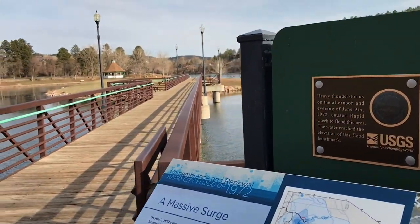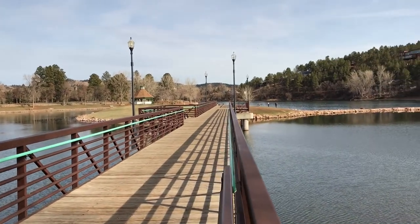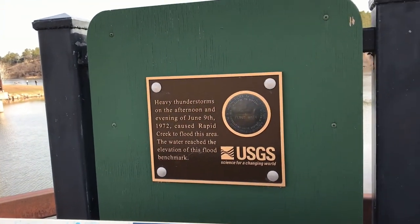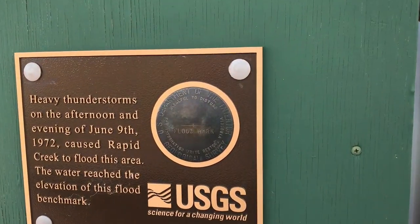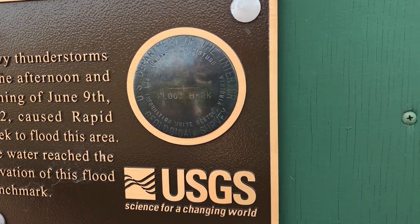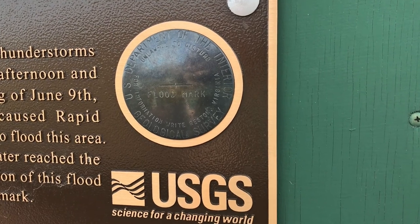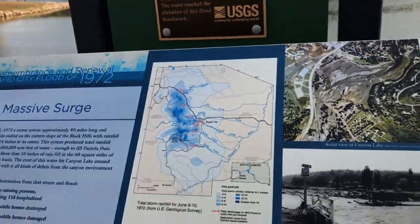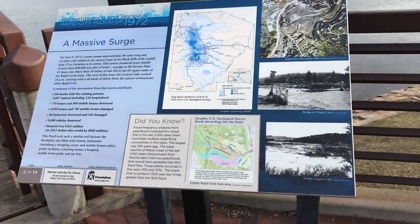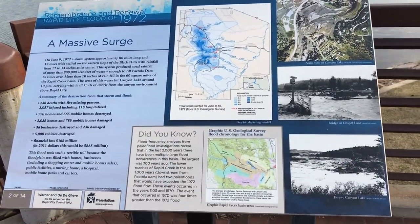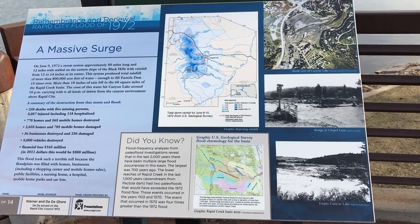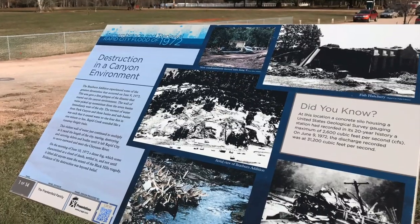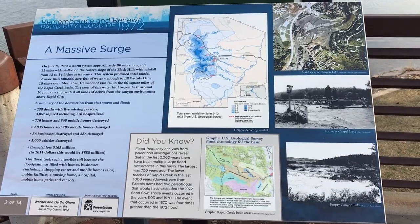I'm out here at the bridge going out to the pavilion in the center of Canyon Lake. If you look, there's a USGS benchmark right here that tells you the level of the flood in 1972. The very center of that benchmark — that horizontal line — tells you the level of the flood. I'm standing in front of one of 14 signs that the city has put up. The first one was at that Braeburn Edition Dog Park; this is the second one.